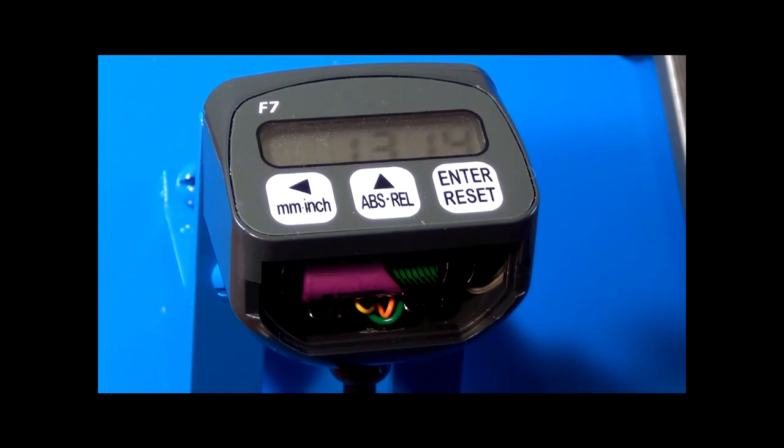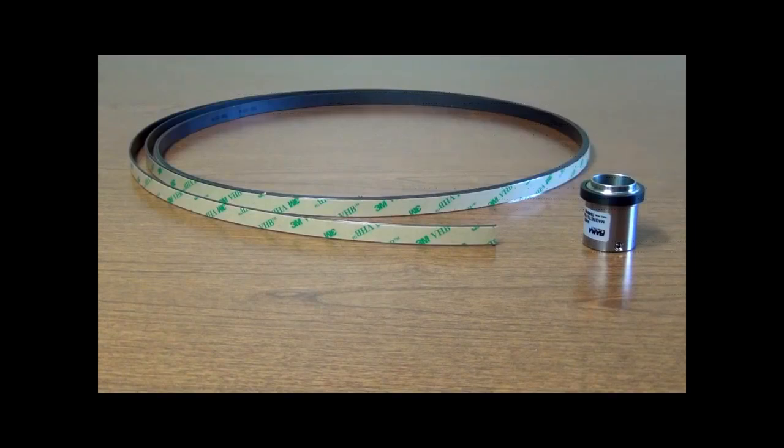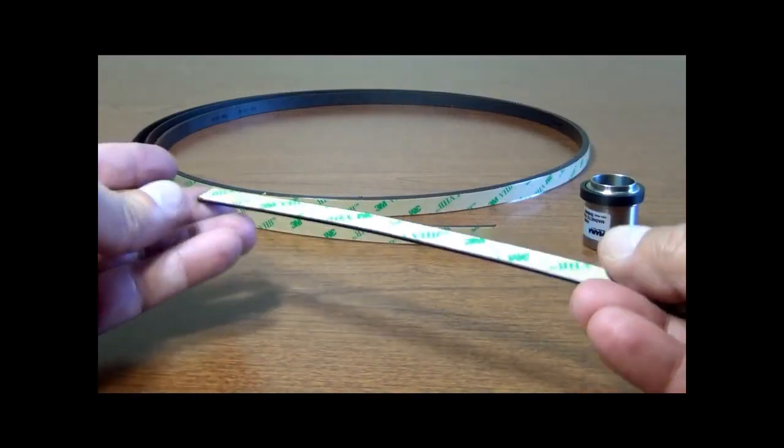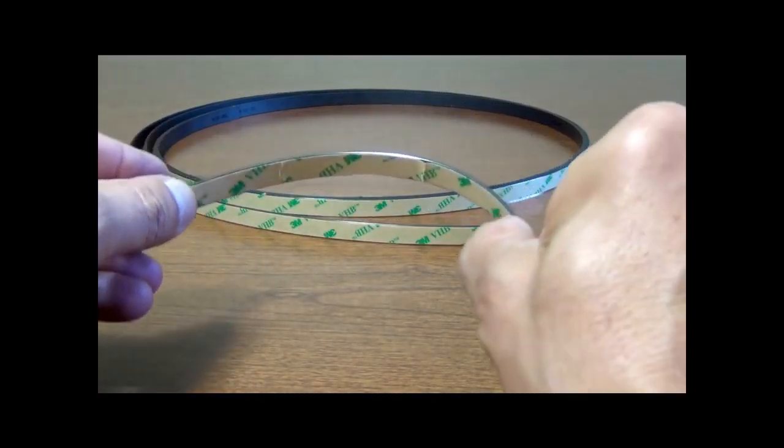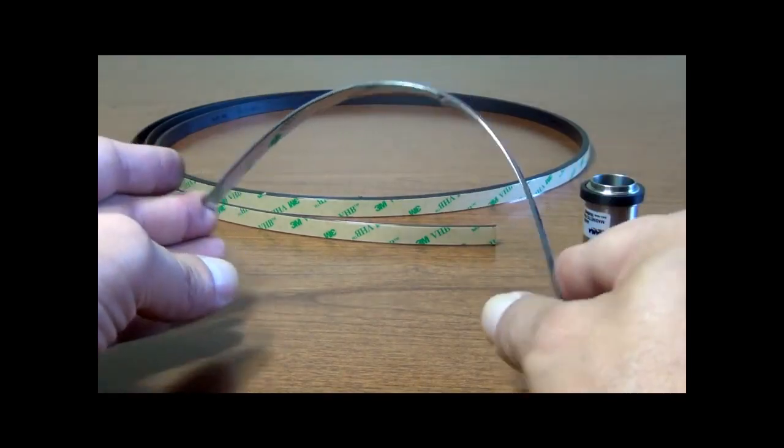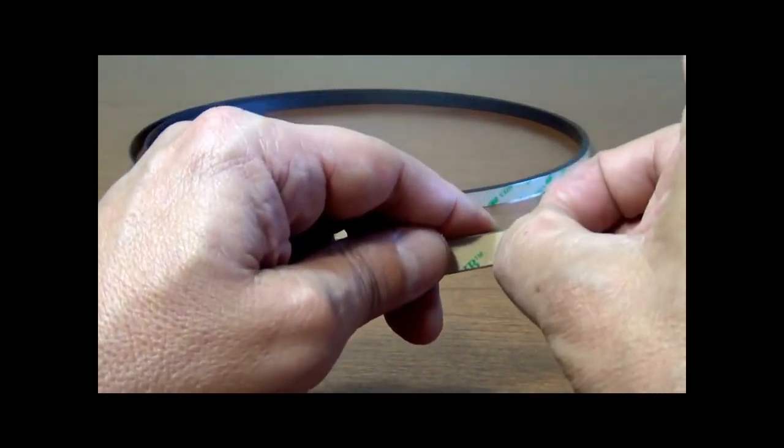The magnetic tape scale is primarily used on linear measurement applications. The tape scale can also, due to its somewhat flexible nature, be integrated on rotary applications on larger diameters with less than 360 degrees of measurement requirements.